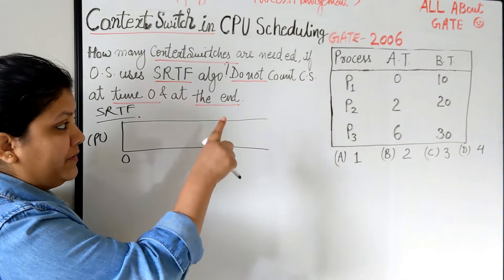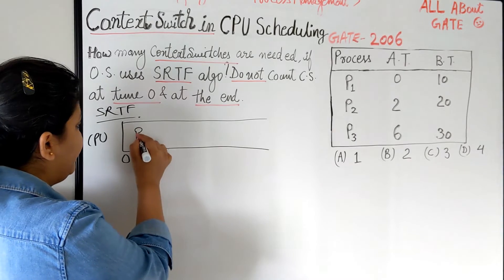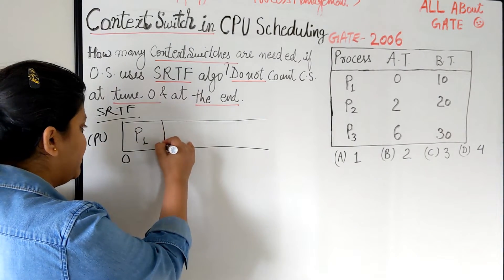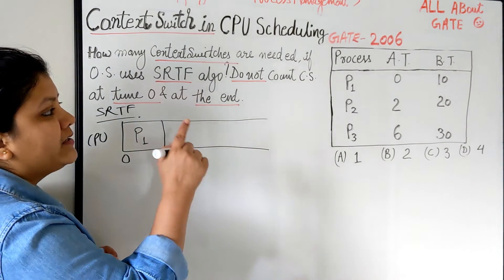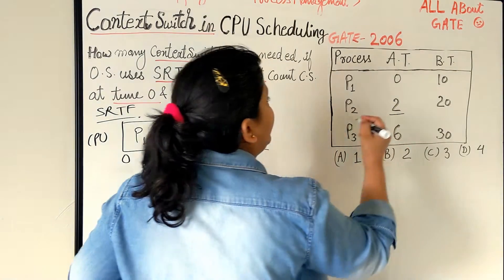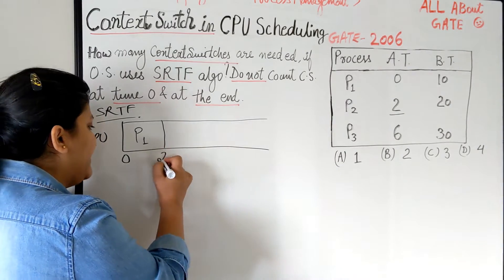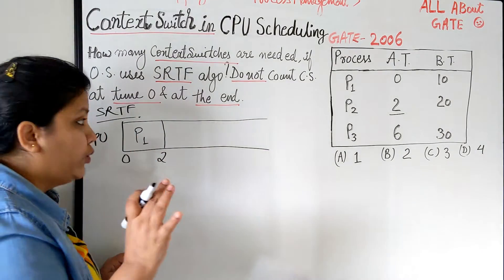So we have three processes P1, P2, P3. P1 arriving at time 0. So at time 0 we have process P1, let's schedule that. And it needs 10 burst. So the next time for me is at time 2. Until 2 there is no other process. So I would blindly schedule it until 2.